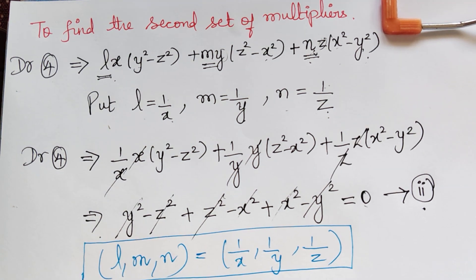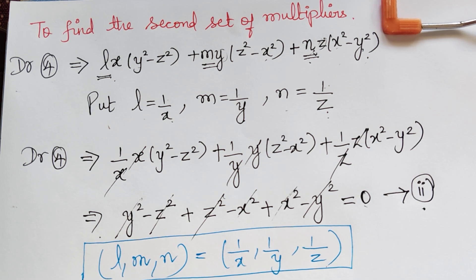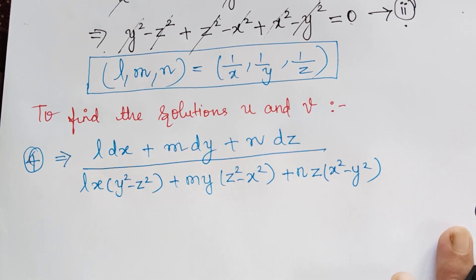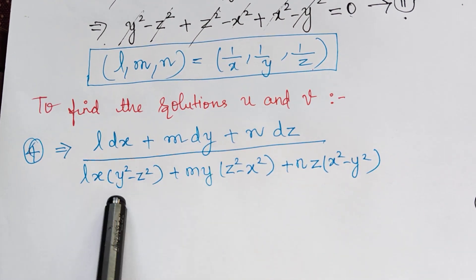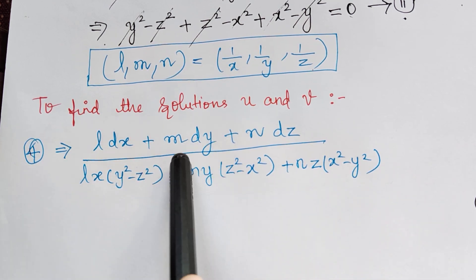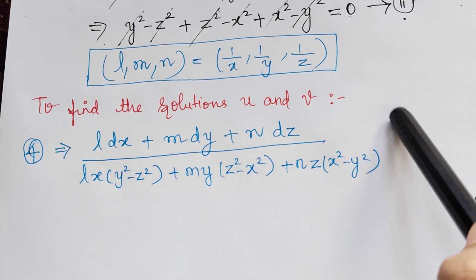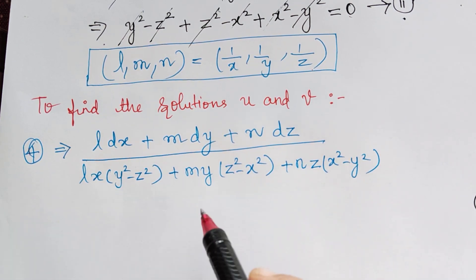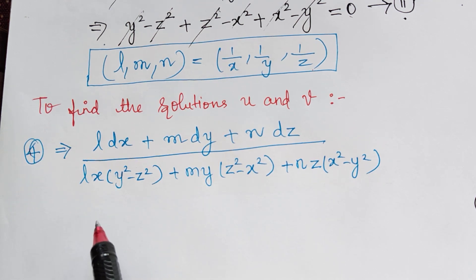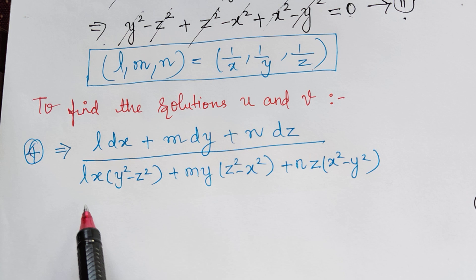We have now decided on both sets of multipliers: the first set is (x, y, z) and the second set is (1/x, 1/y, 1/z). We shall now find solutions u and v. In the fourth ratio, when the denominator is zero, we can equate the numerator to zero — this is the method of multipliers. First we choose multipliers L = x, M = y, N = z.